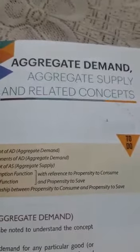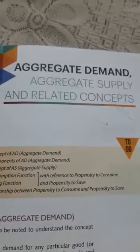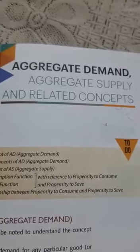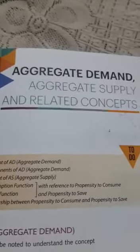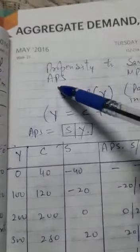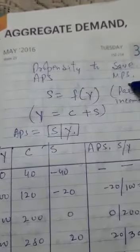In the previous videos, we just discussed about the marginal propensity to consume and average propensity to consume. Today we are here to discuss about the propensity to save. That means we are going through average propensity to save and marginal propensity to save in a similar manner.